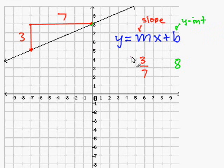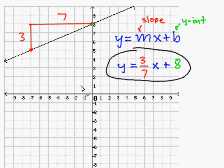Now I have my slope. I just fill in the rest of my equation, which is y equals 3 over 7x plus 8. And this is my equation in slope-intercept form for our line. And this completes our problem.